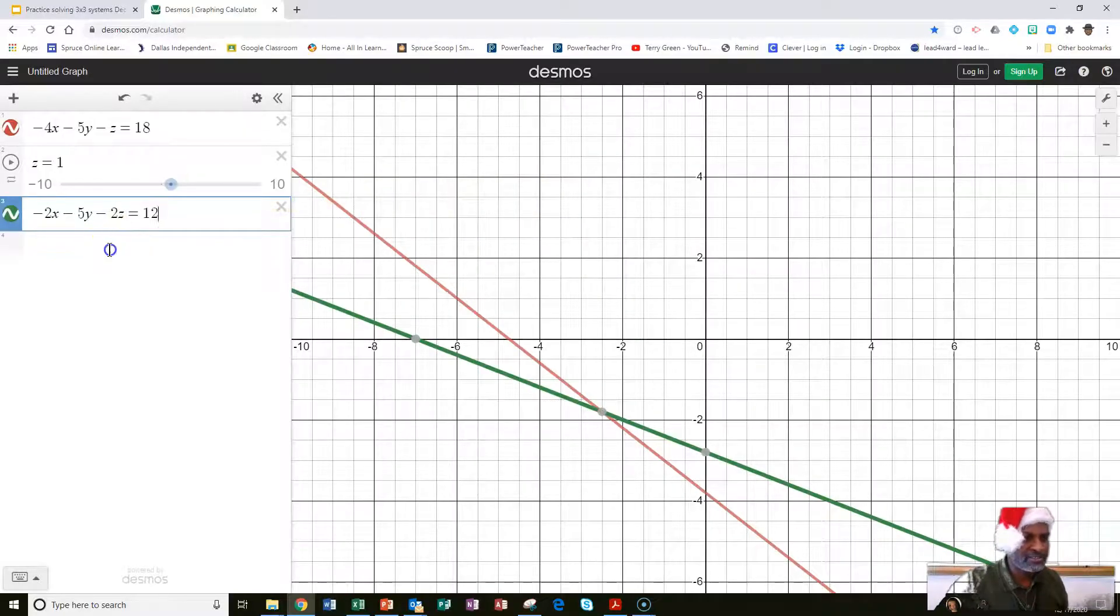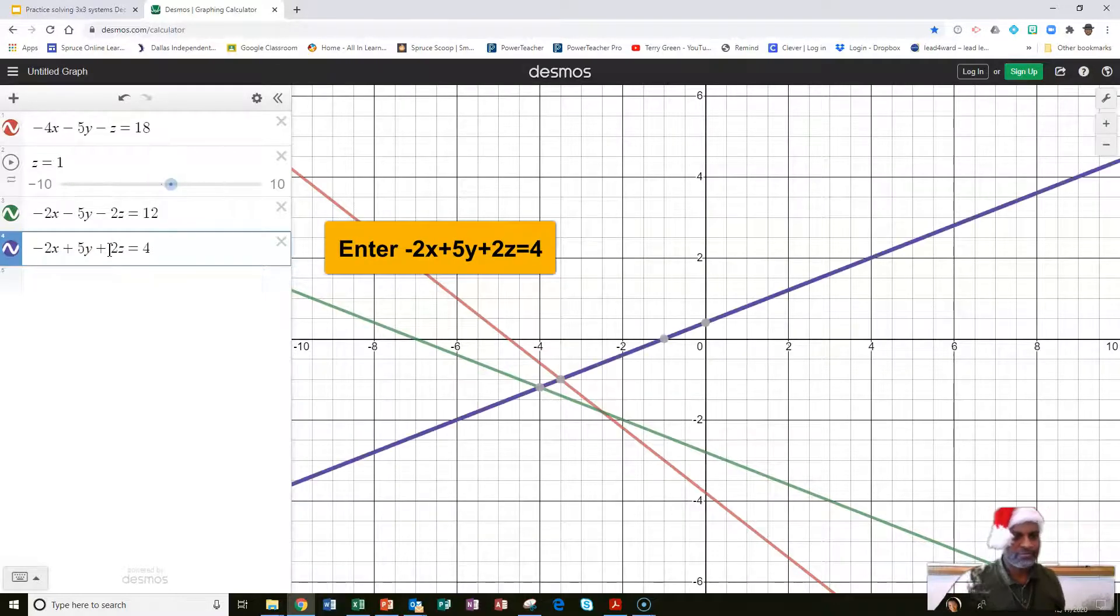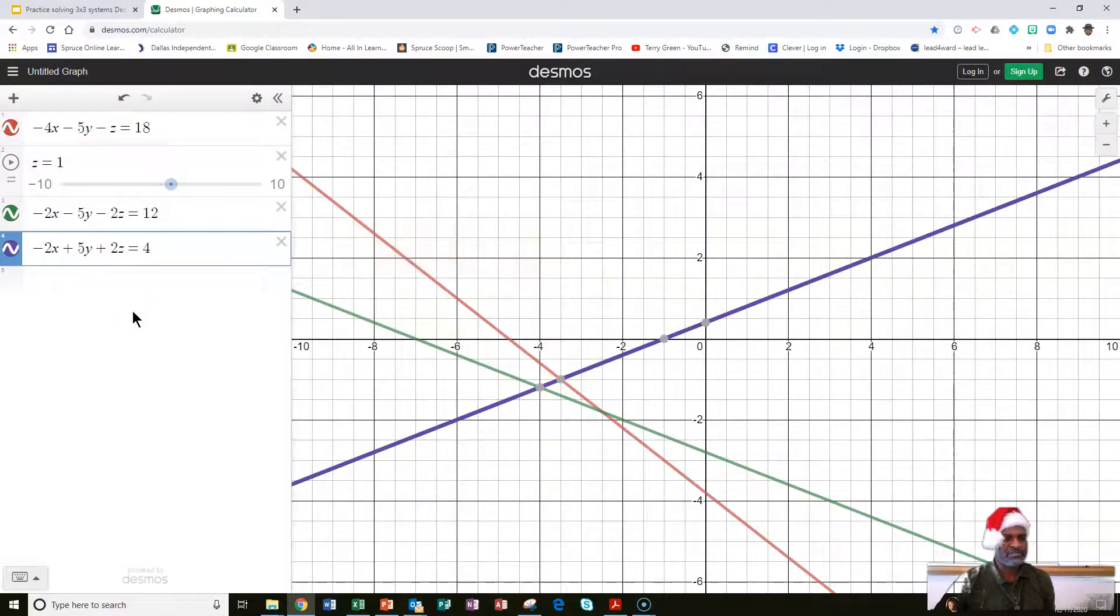Now let's enter the second equation. And let's enter the third equation: negative 2x plus 5y plus 2z equals 4. Now we have all three equations there.